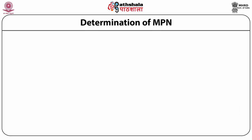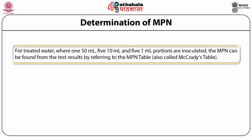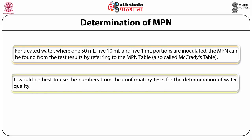For determining MPN in treated water, where 5×10 ml and 5×1 ml portions are inoculated, the MPN can be found from the test results by referring to the MPN table, also known as the MacCredy table. It is best to use the numbers from the confirmatory test for determination of water quality.